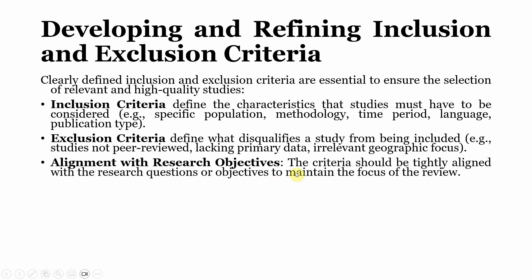Alignment with research objectives: the criteria should be tightly aligned with your research questions or objectives. For example, if you are focusing on the outcomes of servant leadership, you would not consider studies that only examine antecedents of servant leadership rather than its outcomes.